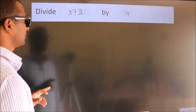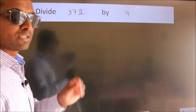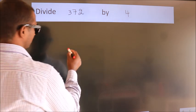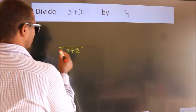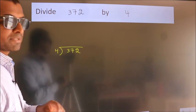Divide 372 by 4. To do this division, we should frame it in this way: 372 here, 4 here. This is step 1.